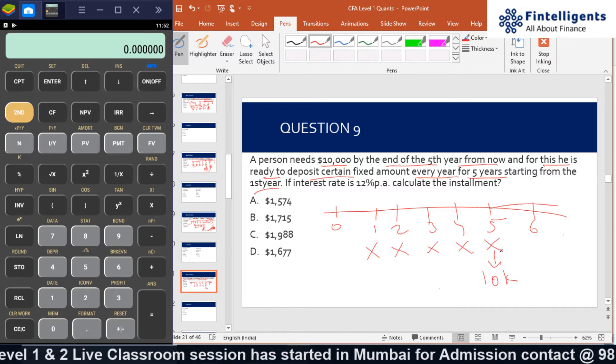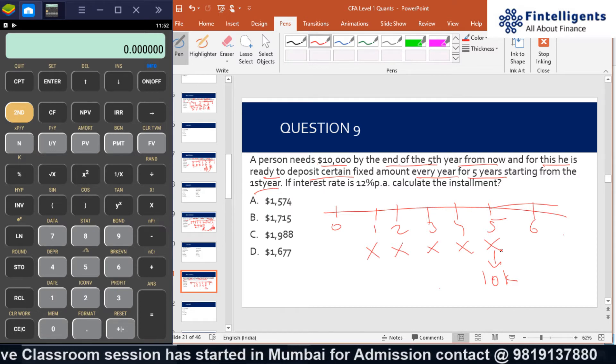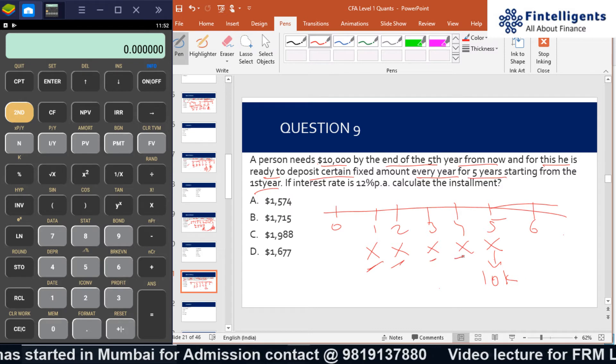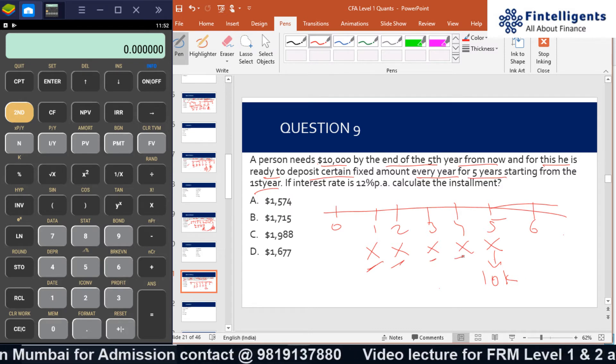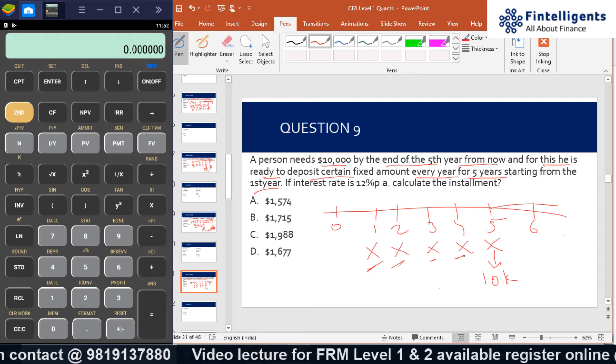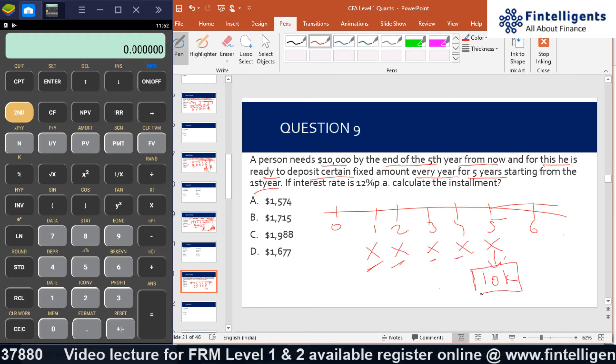Now we have given this sum specifically to you because in the previous sums we have been using PMT to find the future value. We know that whenever we are finding future value, the PMT will always come in the last PMT day. Now in this question, we have already given you a future value.